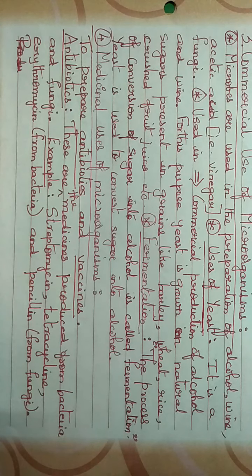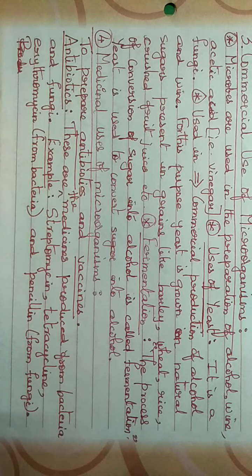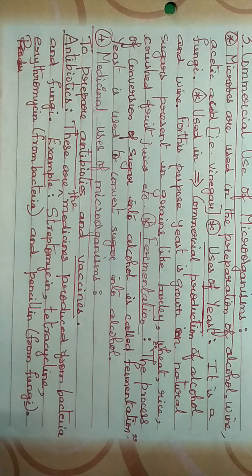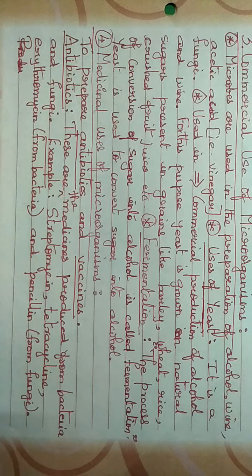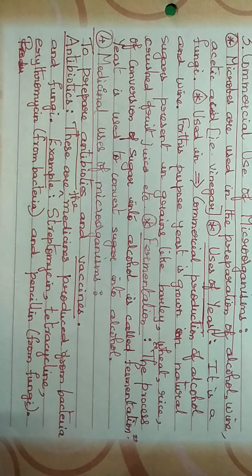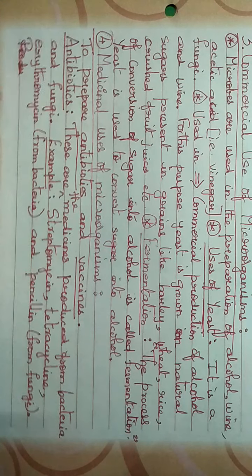Medicinal uses of microorganisms: microorganisms are used to prepare antibiotics and vaccines. Antibiotics are medicines produced from bacteria and fungi. Examples include streptomycin, tetracycline, and erythromycin — these are produced from bacteria — and penicillin, which is produced from fungi.